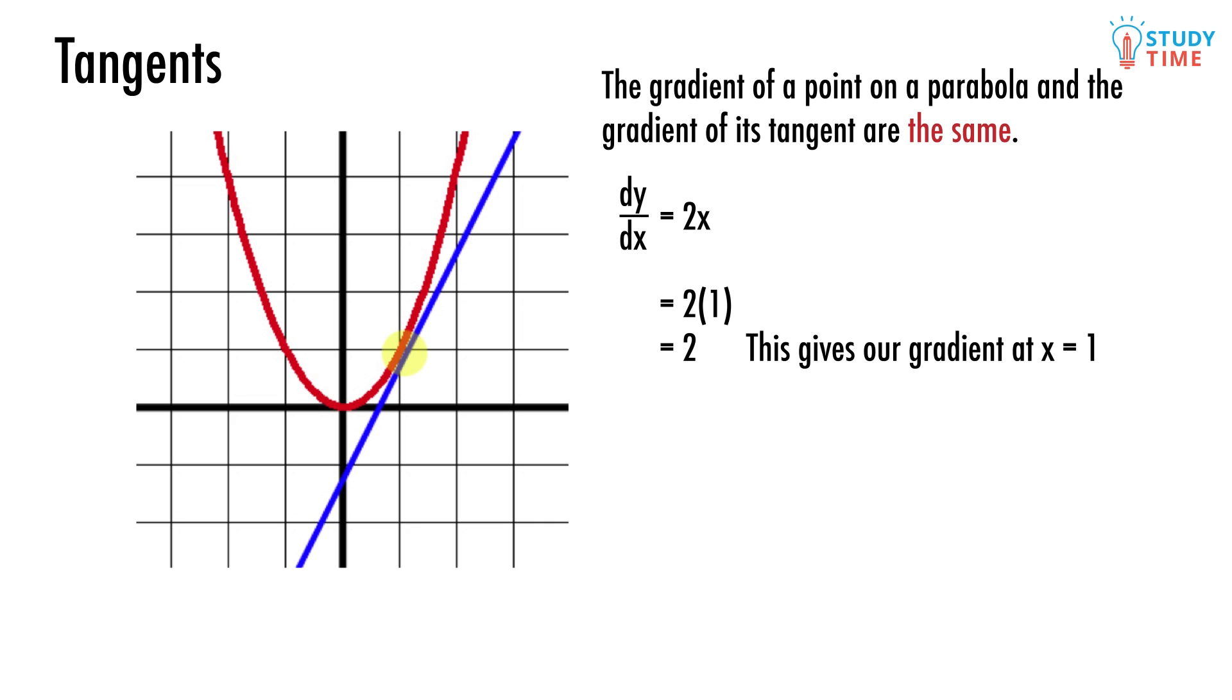Great, but now what? We don't know the y-intercept of the straight line, so sadly we aren't able to use the y equals mx plus c equation. But since we know the x location of this point is 1, we can use the equation of the parabola to find the y location.